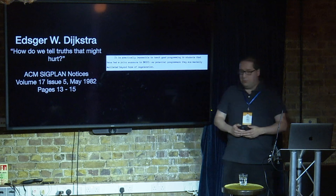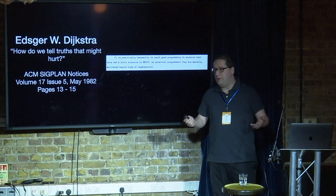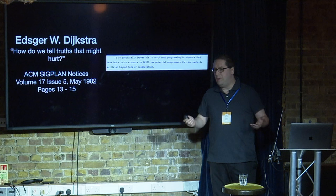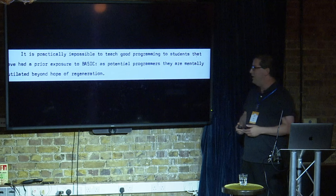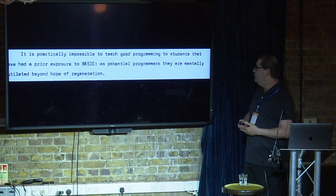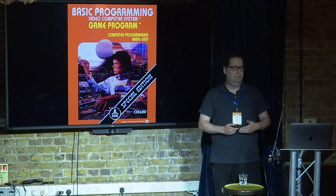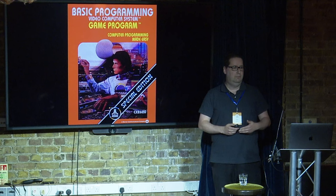I was reading old computer papers, as one does, and I found this paper by Edsger Dijkstra: 'How do We Tell Truths That Might Hurt?' It's a humorous paper — presented as a series of humorous aphorisms. The one that really jumped out at me: 'It is practically impossible to teach good programming to students that have had a prior exposure to BASIC. As potential programmers, they are mentally mutilated beyond hope of recognition.' When I read this, I thought to myself — well, I learned how to program learning BASIC. So am I ruined?